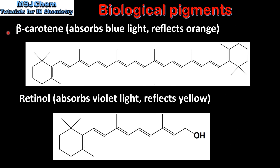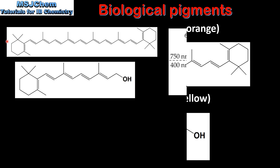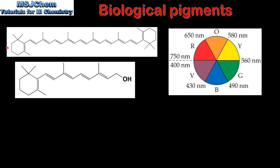Here we have two examples of biological pigments. At the top we have beta carotene, which absorbs blue light and reflects orange light. And at the bottom we have retinol, which absorbs violet light and reflects yellow light. By looking at the structures we can see that beta carotene has a larger conjugated system than retinol. Therefore the wavelength of light that is absorbed by a biological pigment depends on the size of the conjugated system.